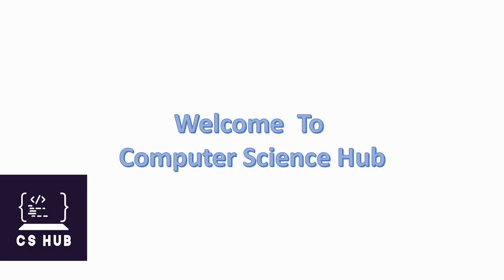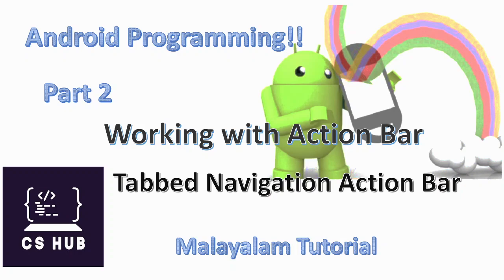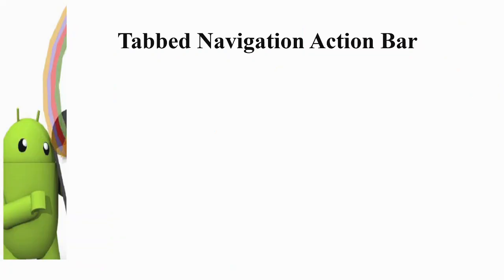Welcome to another video of computer science, subject Android Programming. This is the part second video of working with action bar. In this video we are discussing about tabbed navigation action bar. We are using WhatsApp as the example — in WhatsApp we have different tabs, so we are looking at how to implement it.